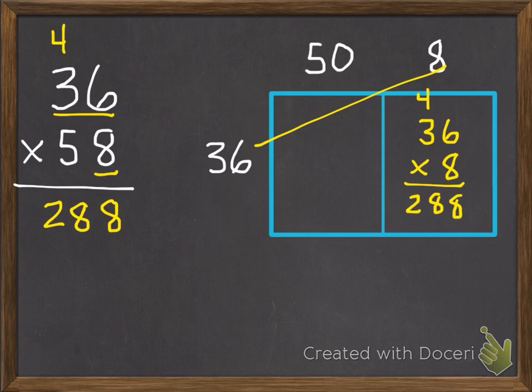I do the standard method the same thing. 6 times 8 is 48. 3 times 8 is 24 plus 4 is 28. Next we multiply our tens, just like with our model: 36 times 50, because that 5 is in the tens place, so that's 50. 0 times 36 is 0. 5 times 6 is 30. 5 times 3 is 15 plus 3 is 18.